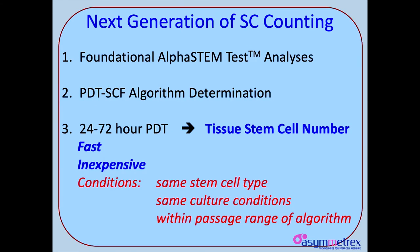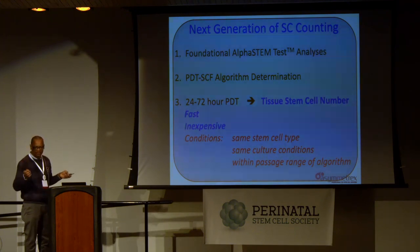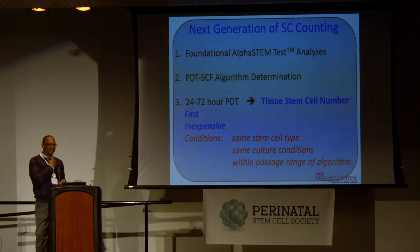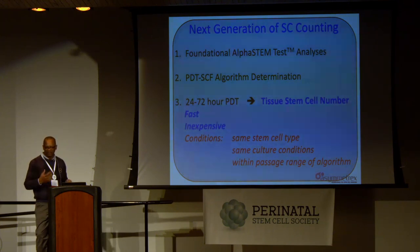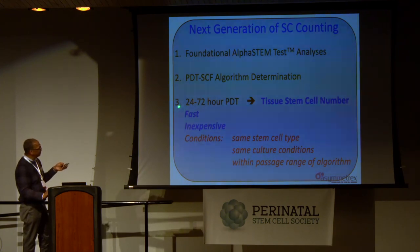We think this is the next generation of stem cell counting. First, we have to do a foundational alpha-stem test analysis like I've shown you — we've got to do one of those studies that takes three to four weeks. Then with that data we will generate the population doubling time to stem cell fraction algorithm. The ones I showed you were done graphically; we're working up software to do that in a computed, automated fashion, with a lot more statistical significance. But once we have the algorithm, then we can just do it.